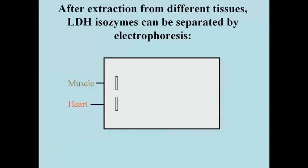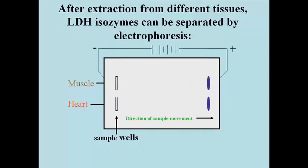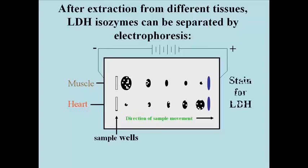LDH can be extracted from different tissues, and the different isozymes separated by starch gel electrophoresis — separating the different isozymes pretty much by charge alone. Here are extracts of heart and skeletal muscle LDH. The samples are put into the wells of an electrophoresis gel and the power turned on. At the end of electrophoresis, the gel is stained specifically for LDH. You can see that the different LDH isozymes are differentially charged in solution, and there are actually five different spots, each representing one of the different isozymes.